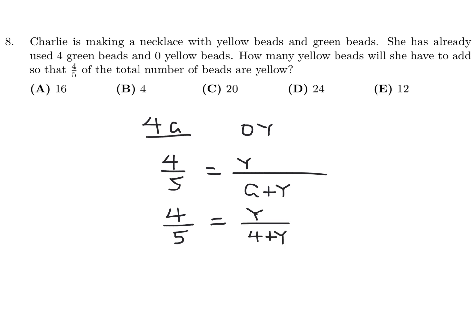And then this is the algebra. Cross multiply. 16 plus 4y is 5y. 16 will equal y. So does that answer the question? How many yellow beads will she have to add? Yeah, because initially starting with 0, we need y to be 16, so you add 16. So E, the answer is E.